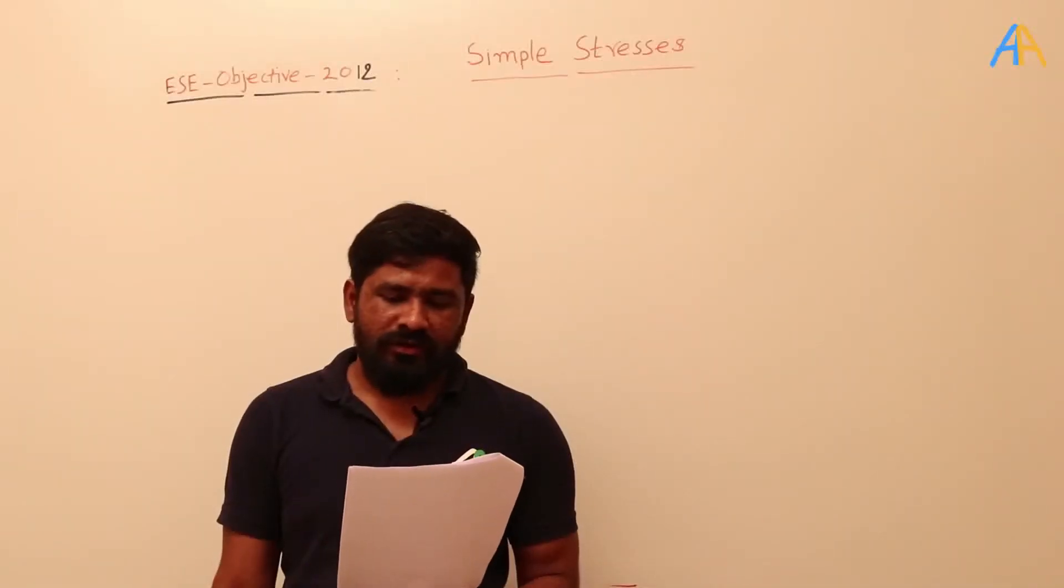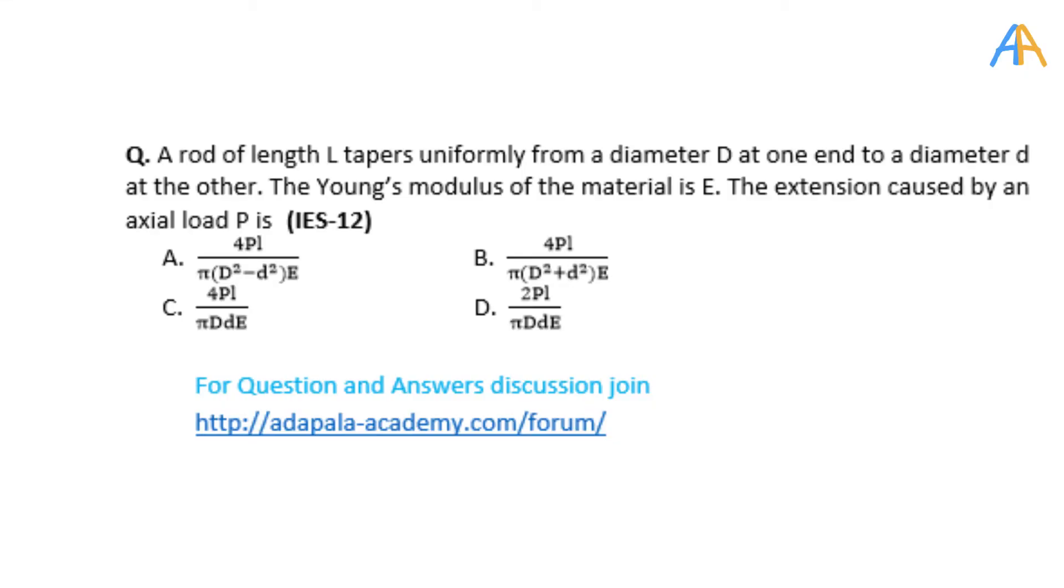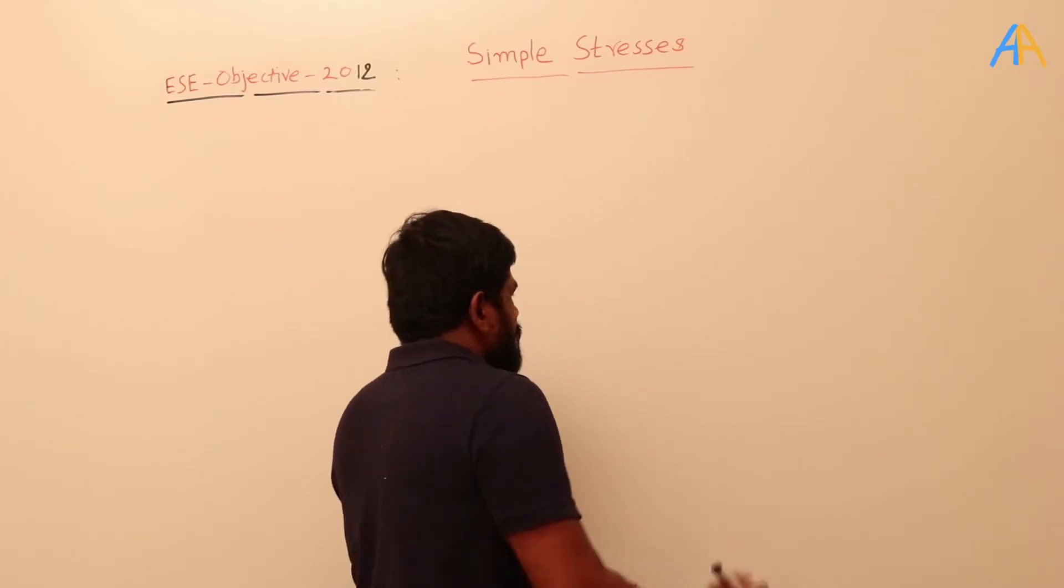Next question is asked in 2012. A rod of length L tapers uniformly from a diameter D at one end to diameter small d at the other. The Young's modulus of the material is E. The extension caused by an axial load P is, this is again the direct formula.